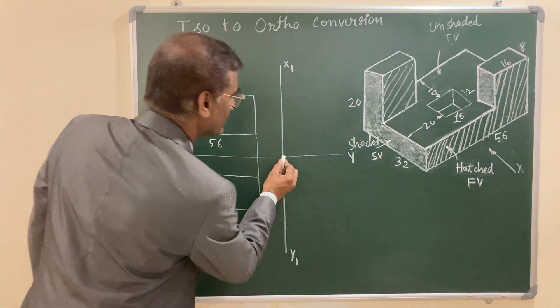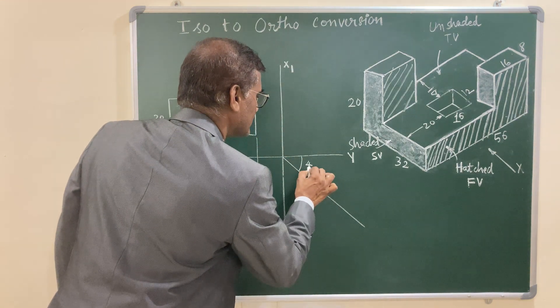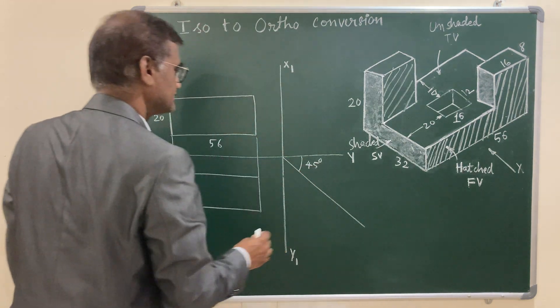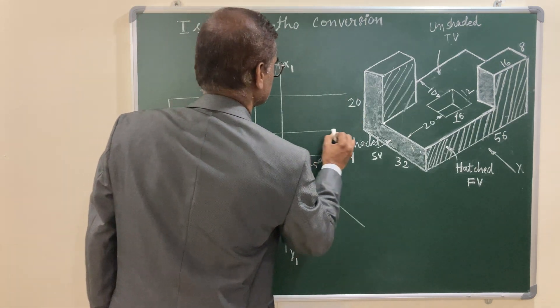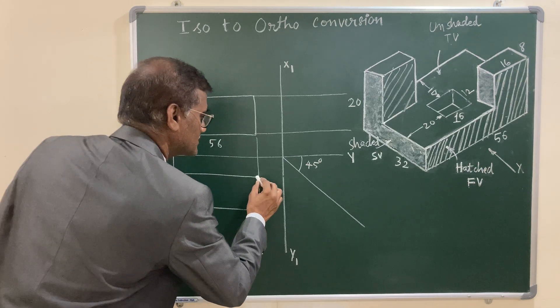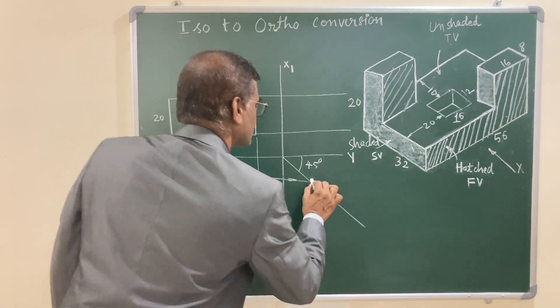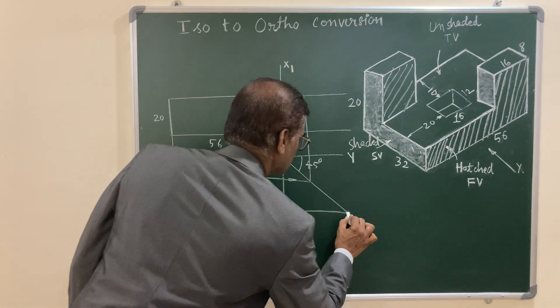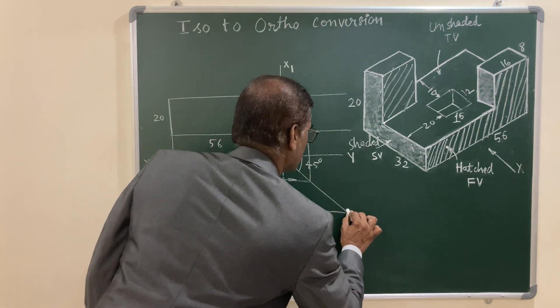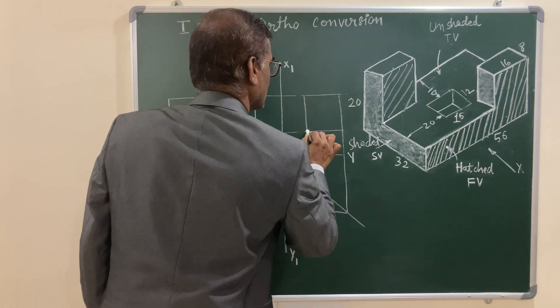And in order to get the rectangle for this side view, let us draw a line at an angle 45 degrees and draw the projectors from the front view. And as well as draw the projectors from the top view up to this incline line and project it upwards. Similarly here also, project it upwards and you are going to get the rectangle for the side view.